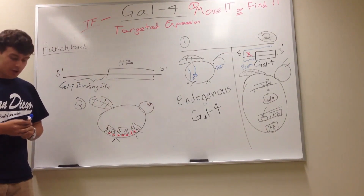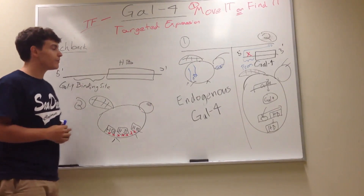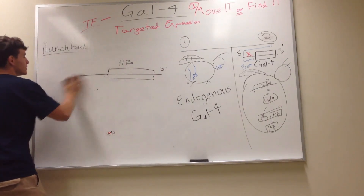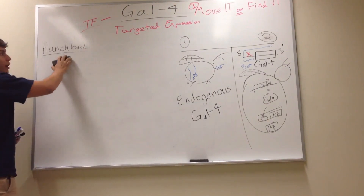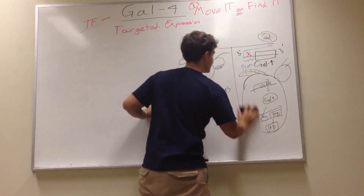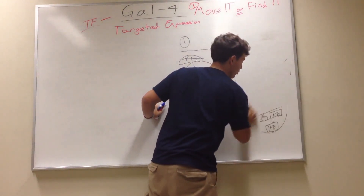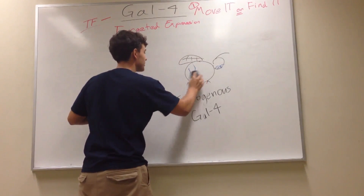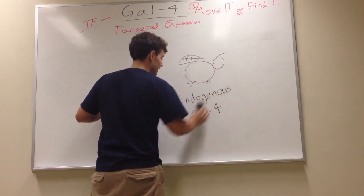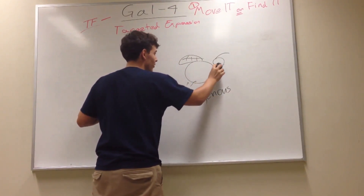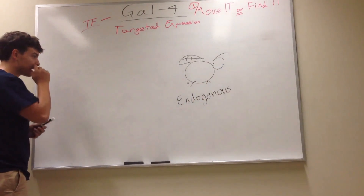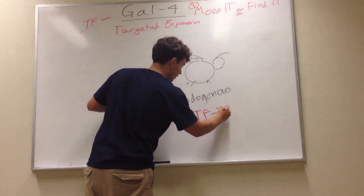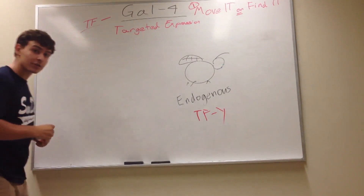Now we're going to move on to the find-it mechanism of GAL4. We are no longer introducing our gene of interest — this is now a find-it type of experiment to find where proteins localize. So we're going to start with our basic fly, and it's going to have endogenous transcription factor Y — not GAL4. We're going to make two constructs once again: one construct that promotes GAL4, and the binding site is actually for transcription factor Y.